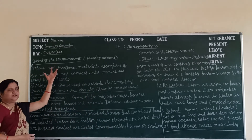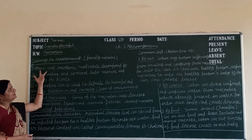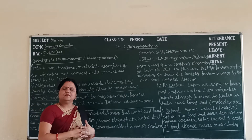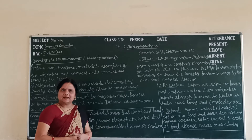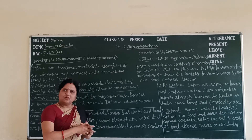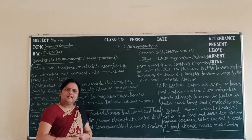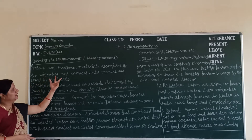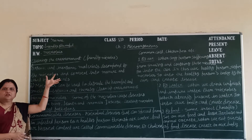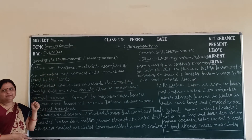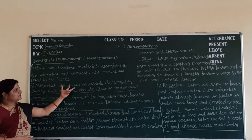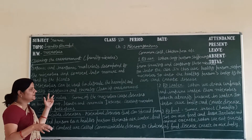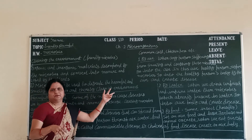Cleaning the environment is a part of what microbes do with organic material. Organic means waste from animals and plants — things like dry leaves and branches fallen from trees. These materials are decomposed by microbes and converted into manure, and these minerals are again used as nutrients by plants. Microbes can also be used to degrade harmful and smelly substances already present in the environment and they clean up the environment.